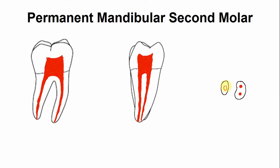In around 8% of mandibular second molars there are two canals in the distal root, similar to the mesial root. But usually the distal root has a single canal.